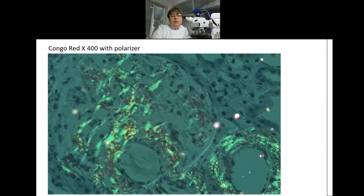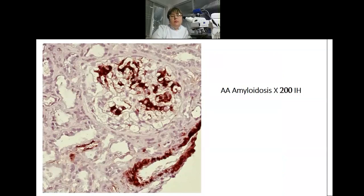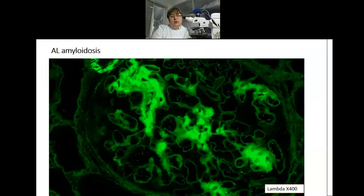This is immunohistochemical stain for amyloid — we can confirm the presence of amyloid by this stain. All pictures that we take are available for the nephropathologist as well. For this, we have a high-quality microscope and digital camera. This is another case of amyloidosis. Here you can see lambda light chain expression in mesangial areas, and the diagnosis was amyloidosis in this case.